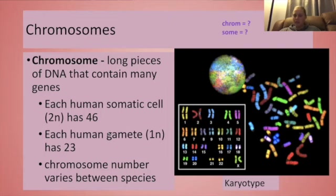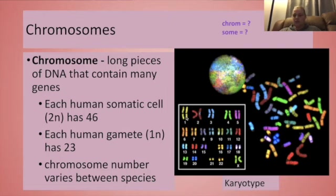Each human gamete, egg or sperm, is going to donate 23 of those chromosomes or just one set to give us these 46 that we're going to find in all of our body cells. We can see here a map of chromosomes, called a karyotype, and this is human chromosomes that have been painted using a technique called FISH, basically taking fluorescent little markers that are only going to bond to certain places found on the DNA. Each different chromosome has some sequences that are unique to it, so they've been painted with a different color that's only going to bond to those unique sequences.